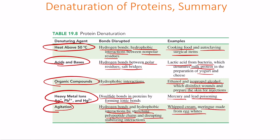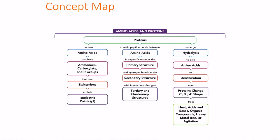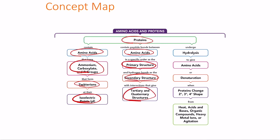In this lecture we discussed proteins and amino acids: the ammonium, carboxylate, and R groups that form zwitterions at the isoelectric point; peptides formed from amino acids by peptide bonds; and primary, secondary, tertiary, and quaternary protein structures. We also covered protein hydrolysis — which releases amino acids by breaking peptide bonds — and denaturation, which changes the secondary, tertiary, or quaternary structure through heat, acids and bases, organic solvents, heavy metal ions, or agitation.